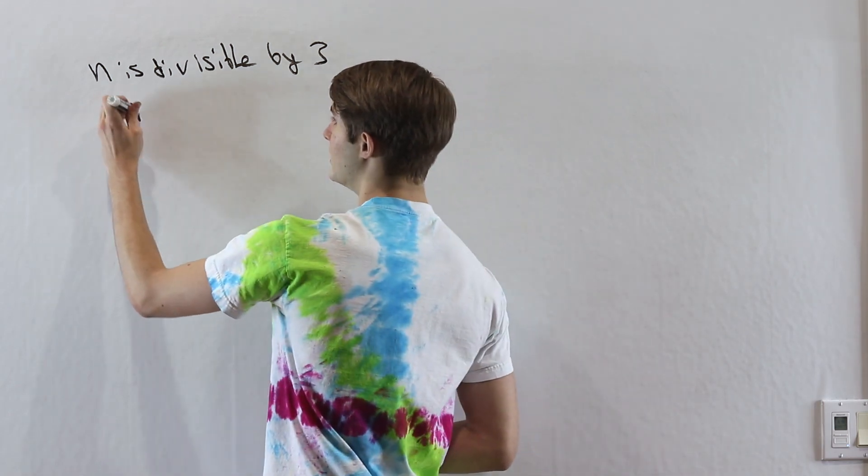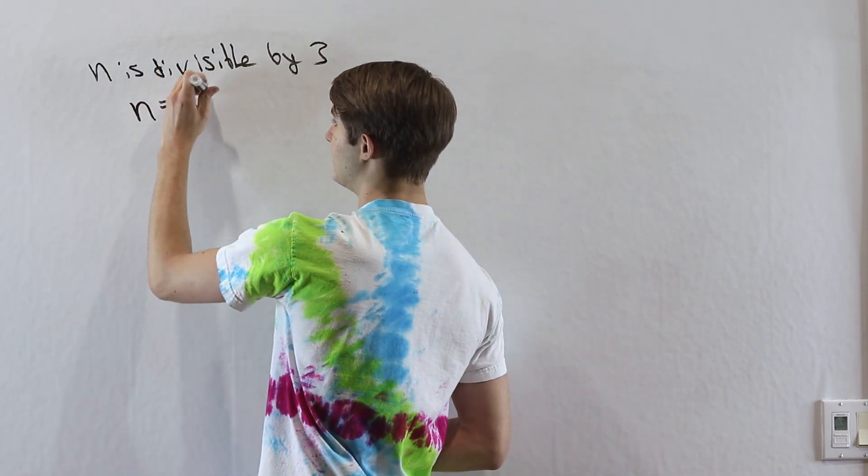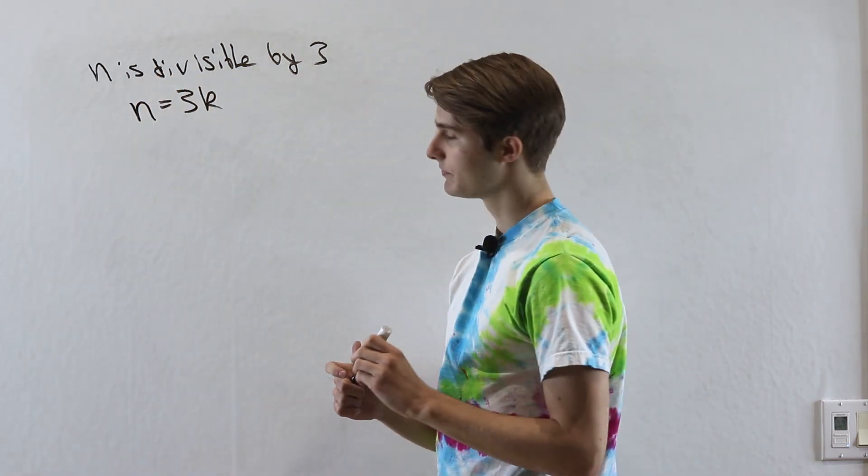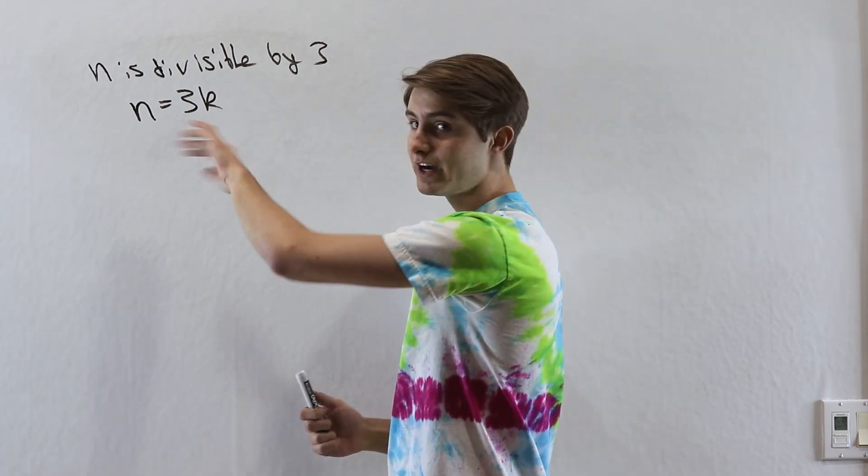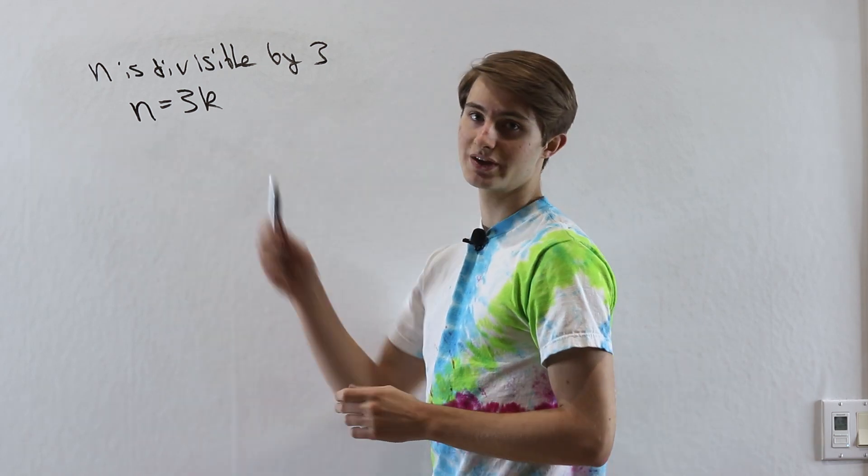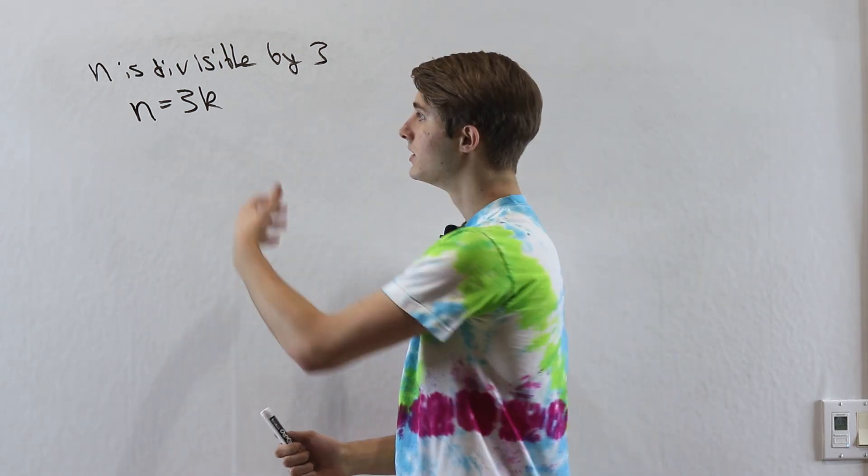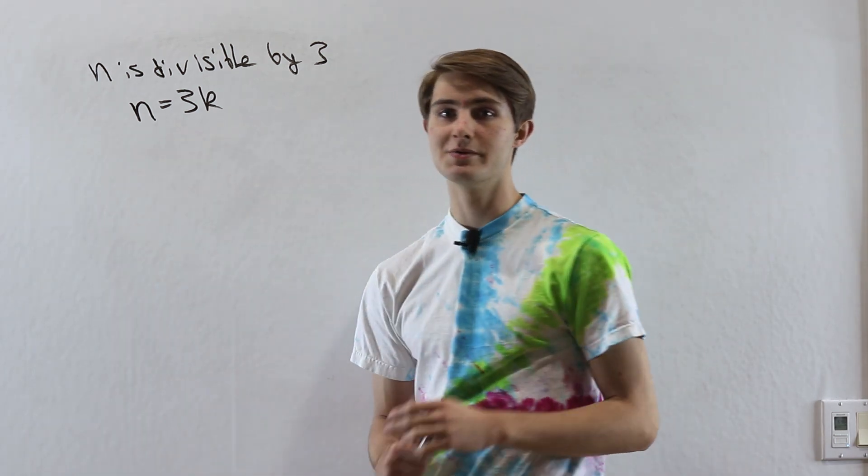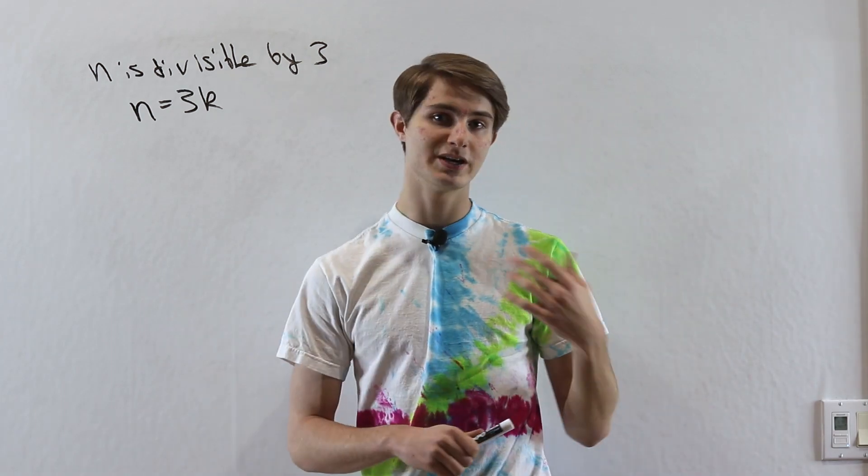Or in other words, that n is 3 times some whole number k. The reason this is the same thing is that if we divide by 3 on both sides of this equation, we get n divided by 3 equals k, where k is a whole number. So this is really what we're looking for when we figure out whether a number is divisible by 3 or 9.